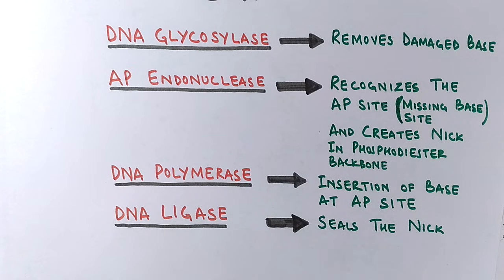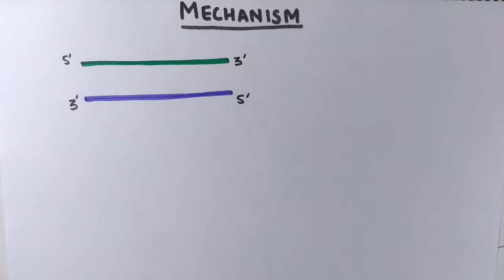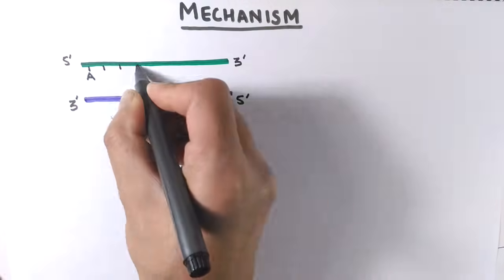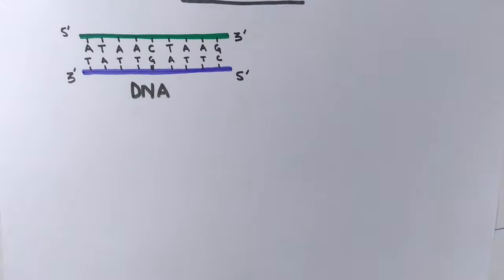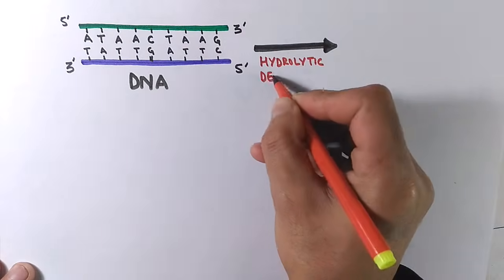Now let's see the detailed mechanism of base excision repair. When normal DNA gets exposed to chemicals and radiations, it damages the DNA. One process is hydrolytic deamination.